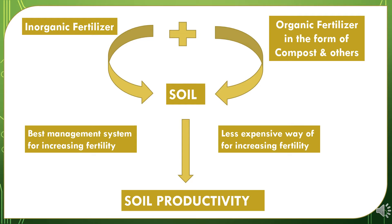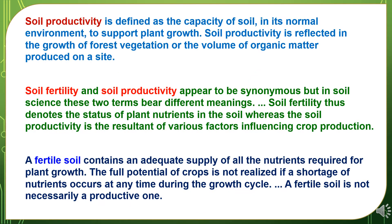Soil fertility can be improved by addition of inorganic fertilizers and organic fertilizers in the form of compost and other means. Improving soil fertility by addition of inorganic and organic fertilizers is a management system for increasing fertility in a less expensive way. If soil fertility is increased, it will ultimately result in improving soil productivity. Soil fertility is defined as the capacity of soil in its normal environment to support plant growth. Soil productivity is reflected in the growth of forest vegetation or the volume of organic matter produced on a site. In soil science, these two terms bear different meanings: soil fertility denotes the status of plant nutrients in the soil, whereas soil productivity is the resultant of various factors influencing crop production.